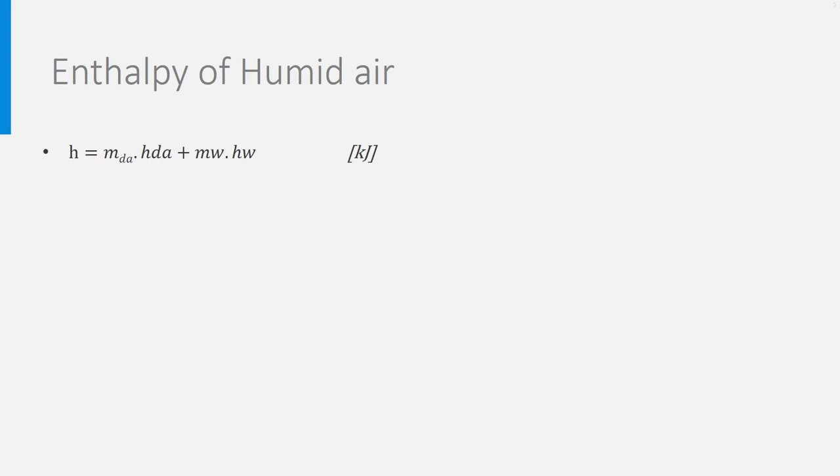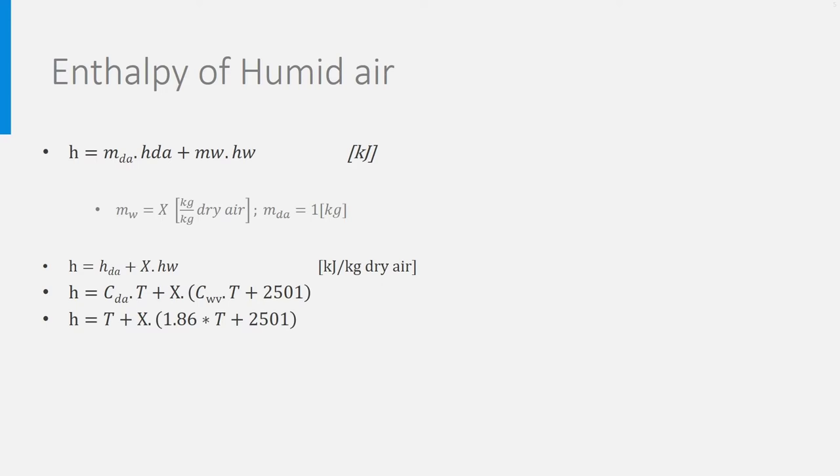Now that we know both enthalpies of dry air and water vapor, we can easily calculate the enthalpy of humid air. If the mass of water is Mw and the mass of dry air is Mda, then the enthalpy of the humid air is Mda times the enthalpy of dry air plus Mw times the enthalpy of water. We remember from other lectures that if we look at 1 kilogram of dry air, Mda is 1 and Mw is x, the absolute humidity, in kilogram per kilogram of dry air.